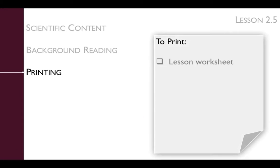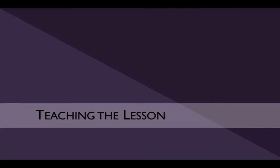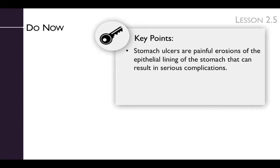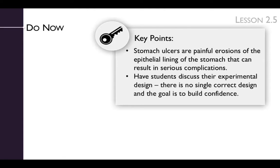Be sure to print the lesson worksheet. The key points of the Do Now are that stomach ulcers are painful erosions of the epithelial lining of the stomach that can result in serious complications. Another key point is to have students discuss their experimental design. There is no single correct design, and the goal is to build confidence.